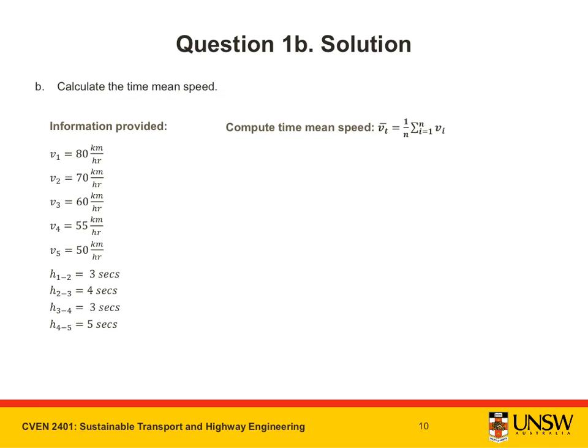Moving on to part B, we are asked to calculate the time mean speed. Time mean speed is the average speed of all vehicles passing a point over a duration of time. It is the simple average of spot speeds and is given by the equation here.